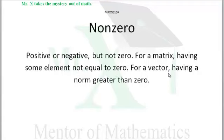For a vector, if we have a length of that vector greater than zero, then we have a non-zero vector. A non-zero matrix or a non-zero vector have importance in the language of math.